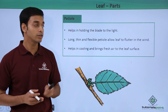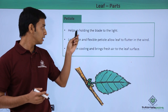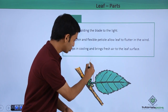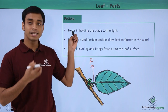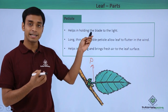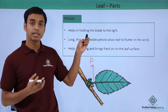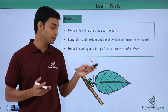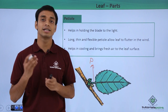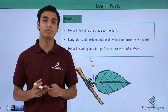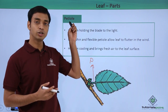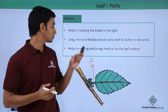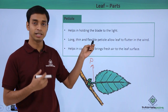The next structure of the leaf is the petiole, which is also known as the leaf stalk. This helps in holding the structure of the leaf, attaching itself to the stem, and it helps in exposing the leaf to light. Light is very essential for the leaf because leaves have chlorophyll, and this chlorophyll requires sunlight in order to perform photosynthesis and prepare food for the plants.